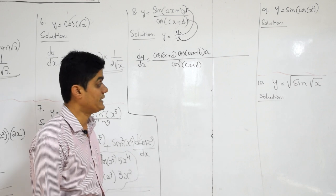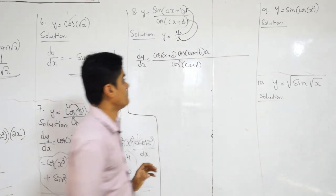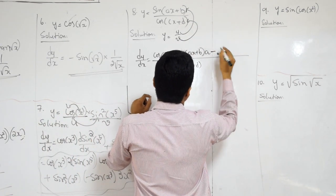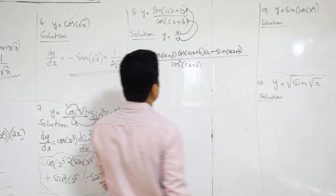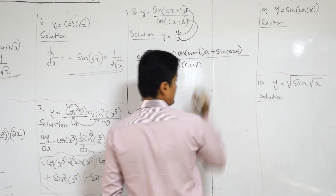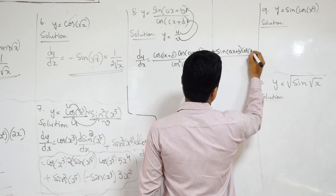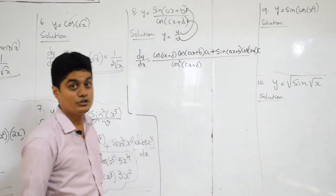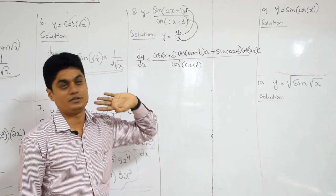Understood? Now, chain rule: differentiation of sin is cos, derivative of ax plus b is a. Minus sin of ax plus b into — what is the derivative of cos? Minus sin — so I will make this plus — into cos of cx plus d into c. That c is nothing but derivative of cx plus d.